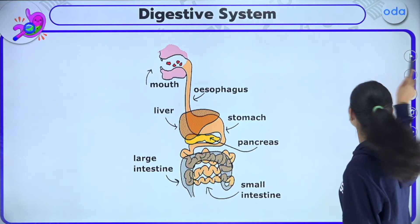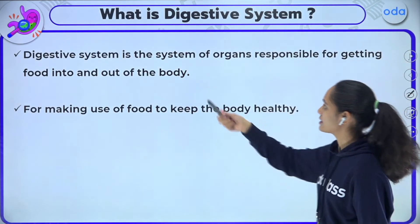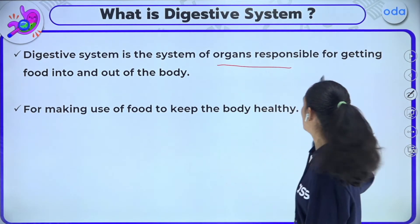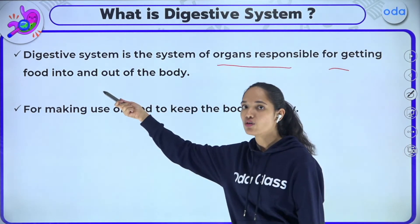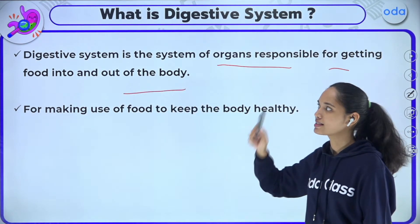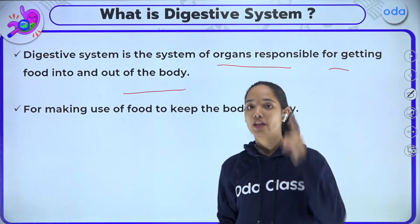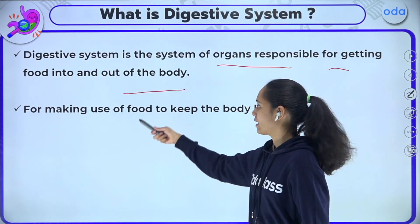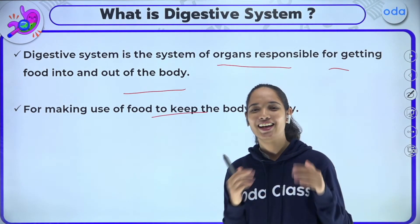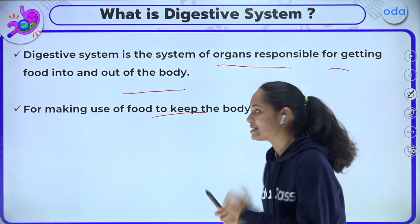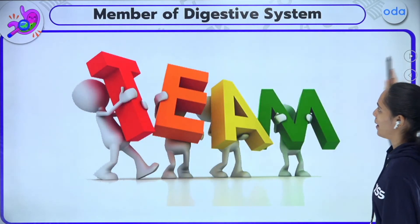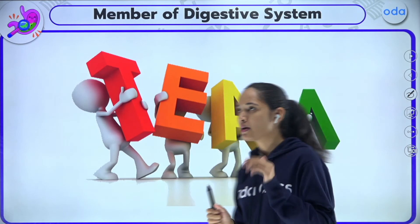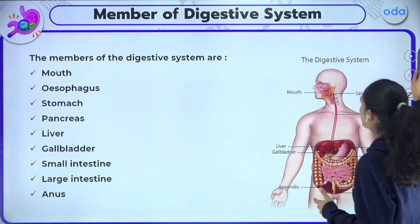The digestive system is the system of organs responsible for getting food into and out of the body. It is the duty of the digestive system to take food in and to remove it out of the body, making use of food to keep the body healthy and strong. This system has many members — it is a big team.